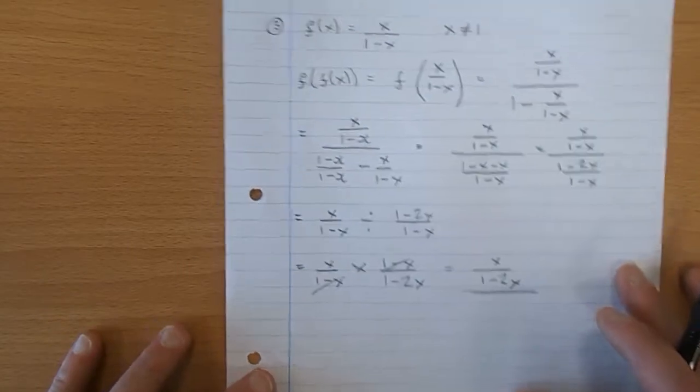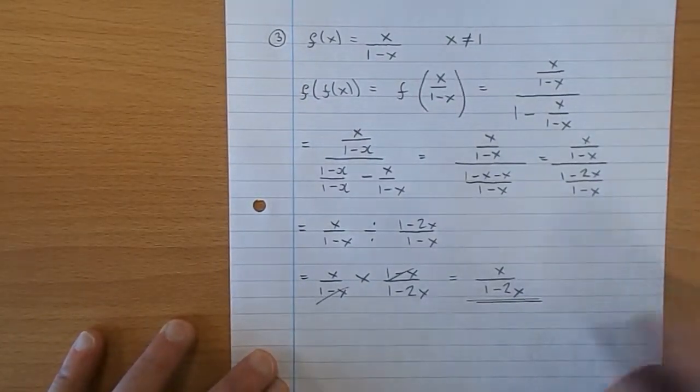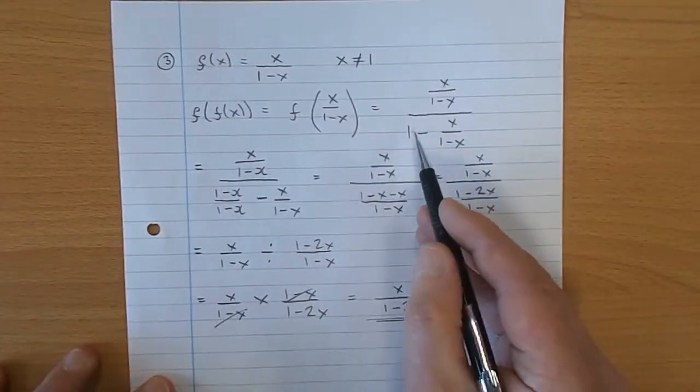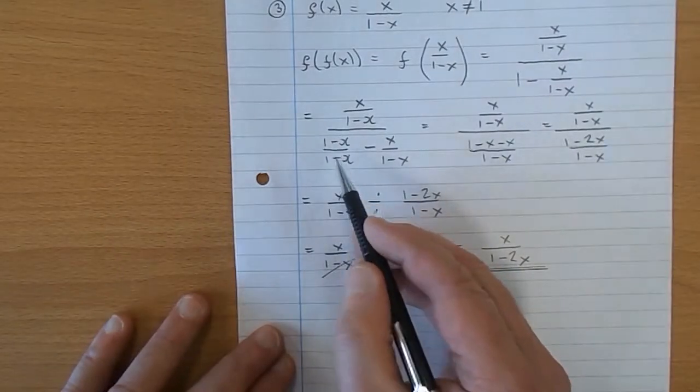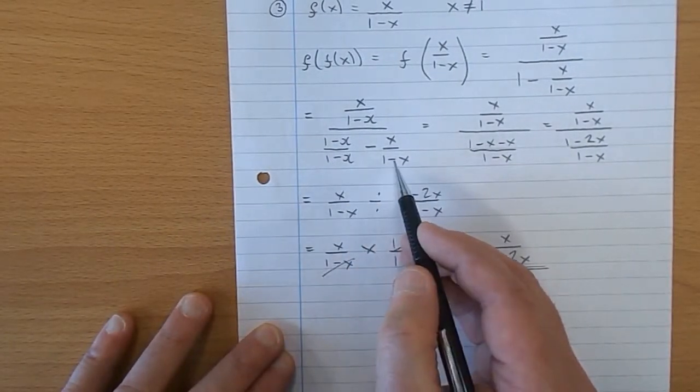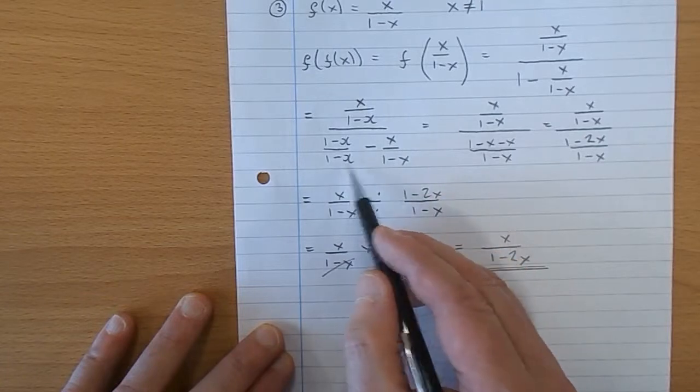Okay, now we have some reasonably difficult algebra. That one, I'm just calling 1 take x over 1 take x. Why? Because it now gives me a common denominator of 1 take x.